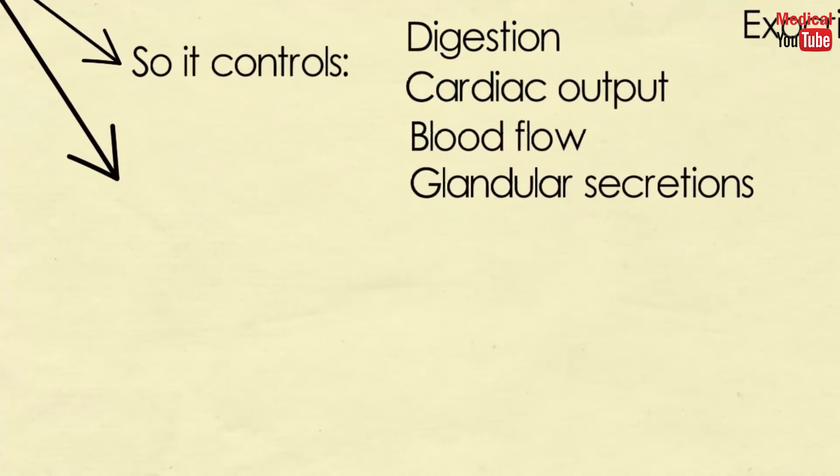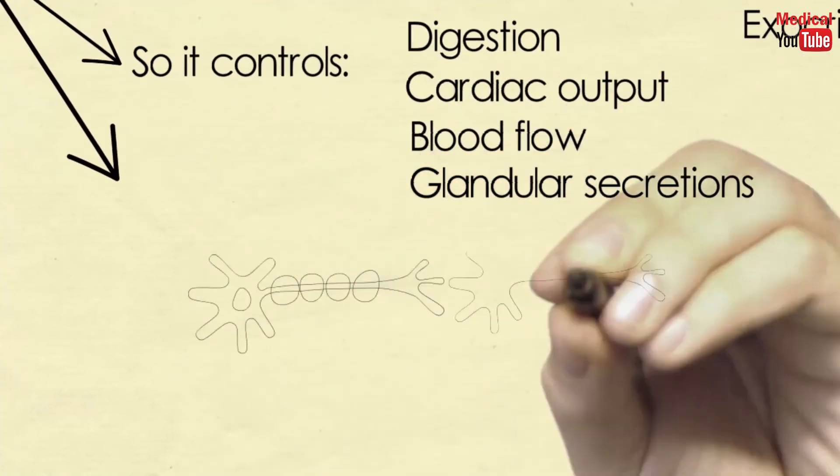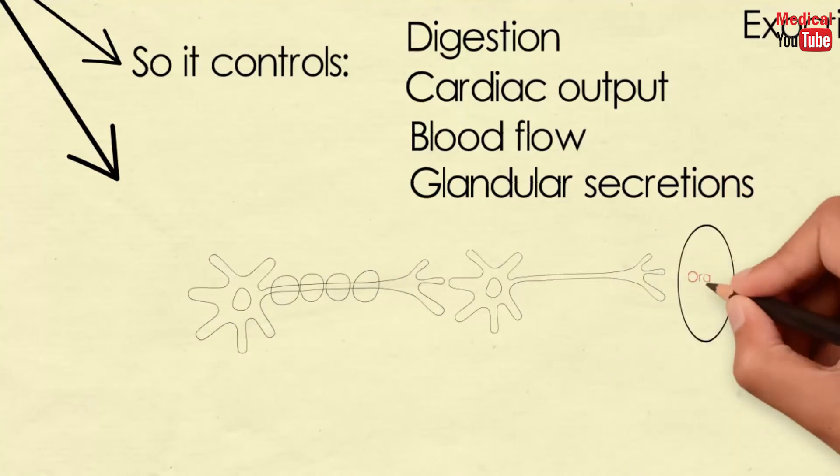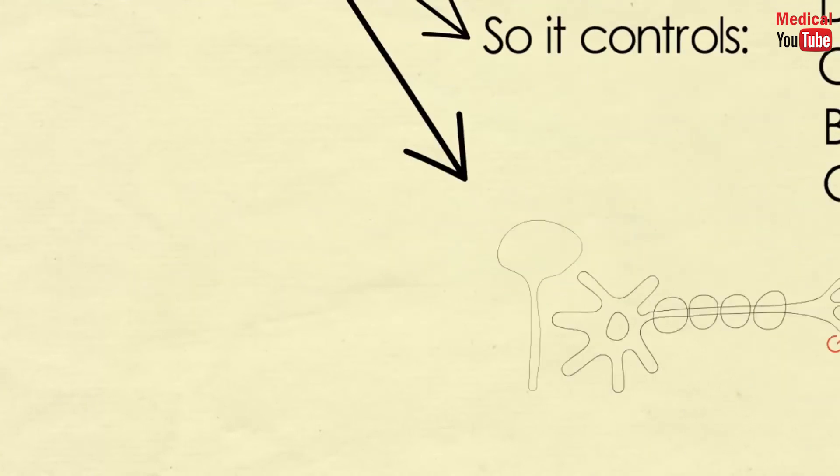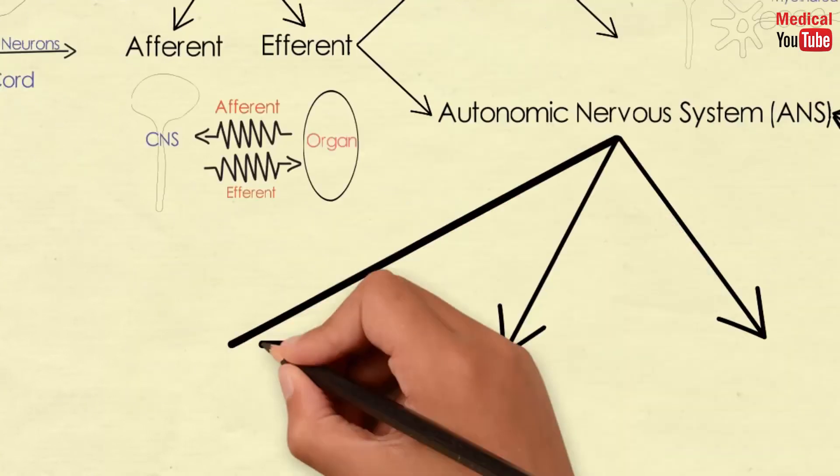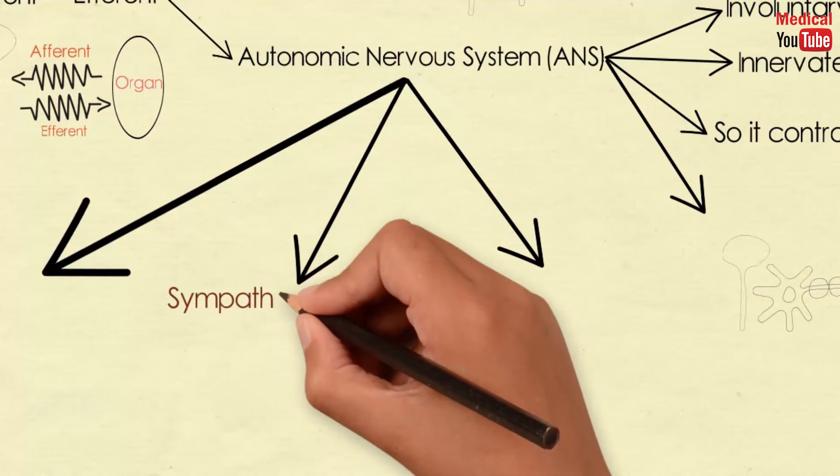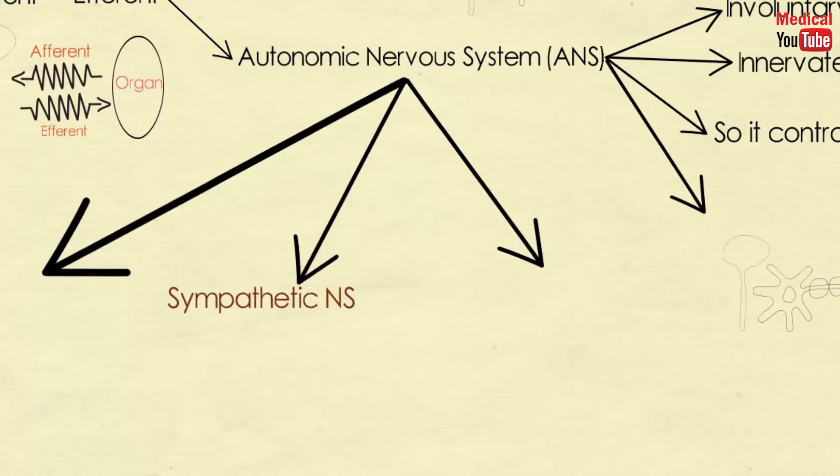Anatomically it is interrupted by ganglia, and the post-ganglionic fibers are usually not myelinated. The efferent ANS is divided into the sympathetic and the parasympathetic nervous systems, as well as the enteric nervous system.